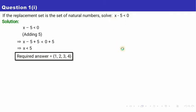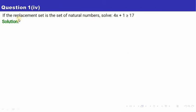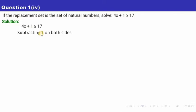You may pause the video to note that down. Now let's move to the next question. The replacement set is the same, but this time we have an inequation — it's called an inequation when there is no equals-to sign. We want to find the value of x, so first let's get rid of the extra term. We have plus 1, so we subtract 1 from both sides.